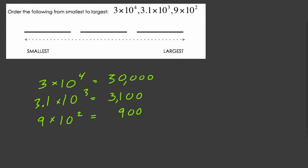Now if I line these numbers up in their appropriate place value, that will help us a little bit. Move this over here. Okay. It becomes clear that 30,000 is larger than 3,100 and certainly larger than 900.